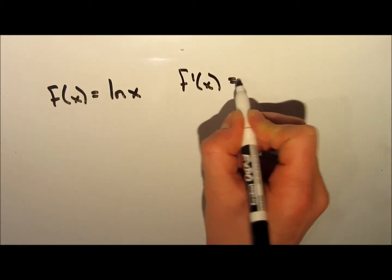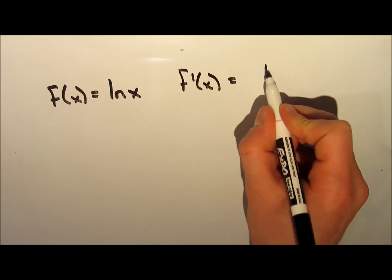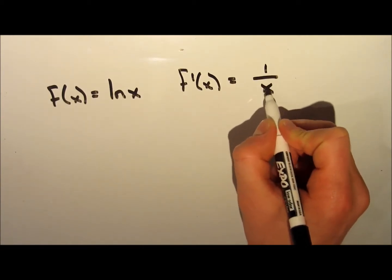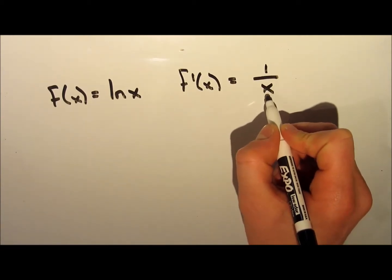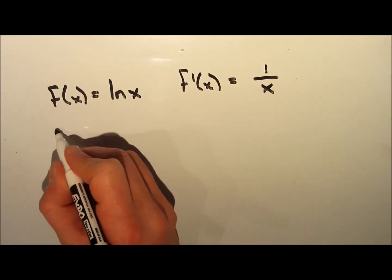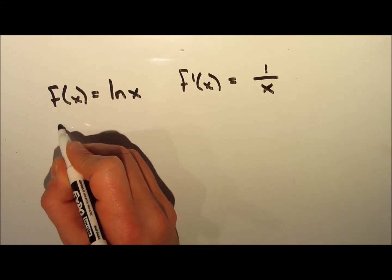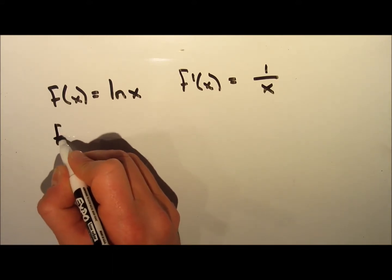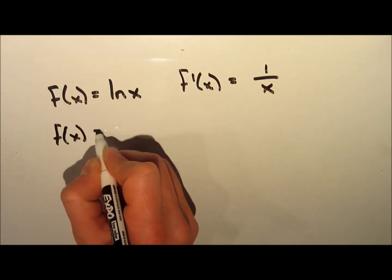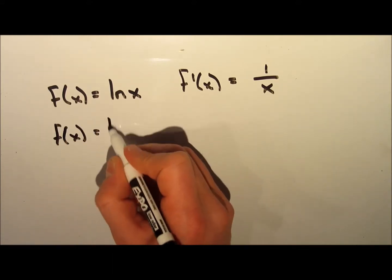The simplest function we can take the derivative of is ln(x), and the derivative of ln(x) is 1 over x. This is just something that you'll have to remember. We can expand on this.